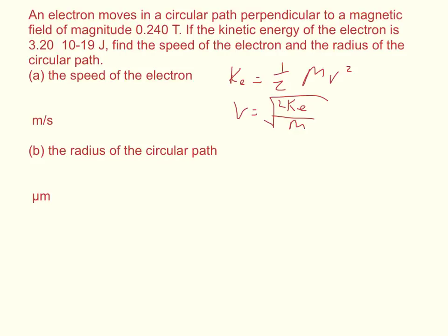Then we can use the cyclotron equation. The radius is equal to the mass times the velocity over the charge times the magnetic field.